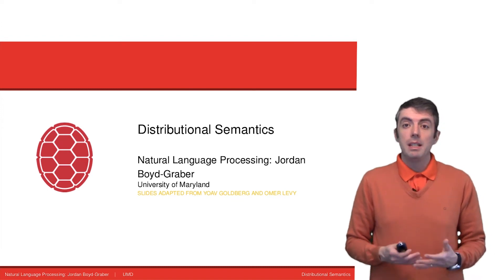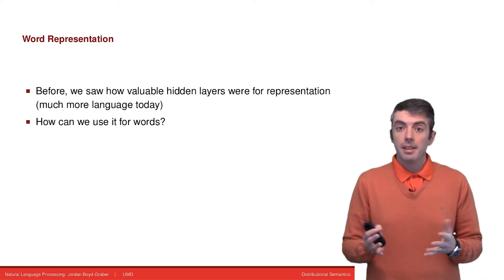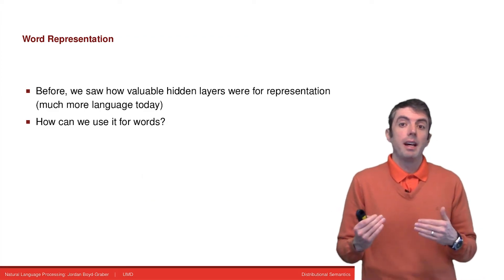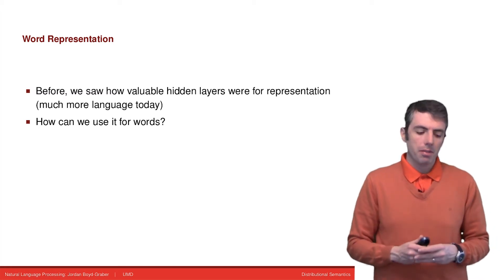Today we're going to be talking about meaning and how you represent words on a computer. In the previous lecture, we saw how useful it was to have a hidden layer in neural models. And can we do something similar for words?